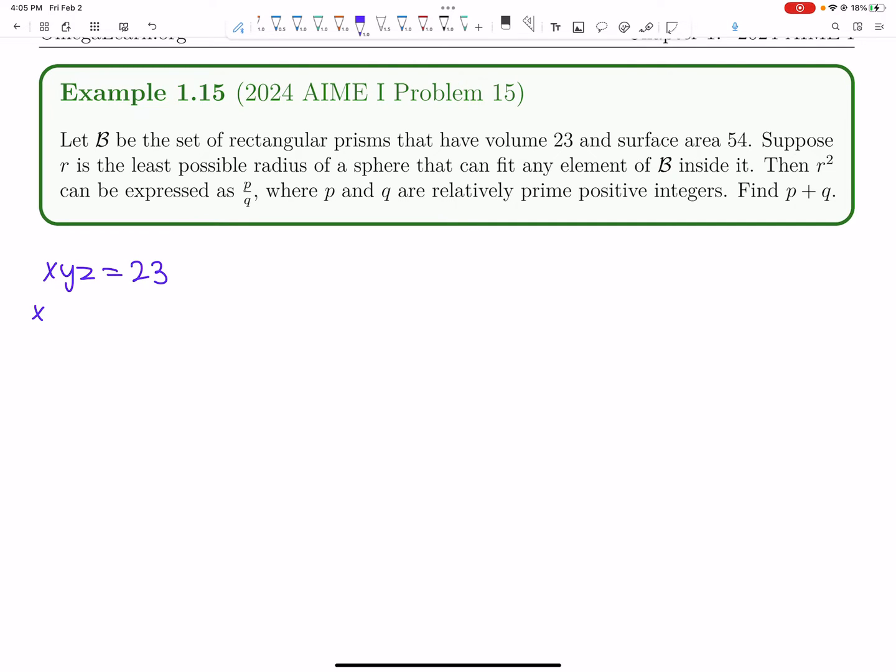Surface area 54. So xy plus xz plus yz is 54. And okay, so we're basically saying, suppose R is the least possible radius that can fit any element inside of it. So basically amongst all rectangular prisms,